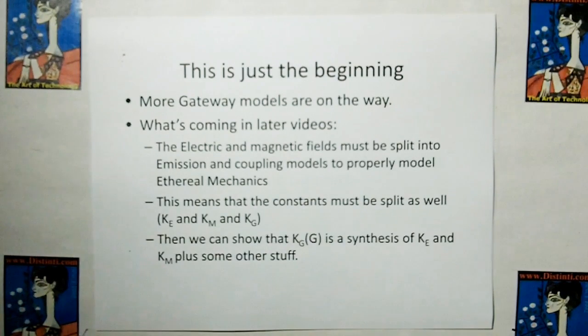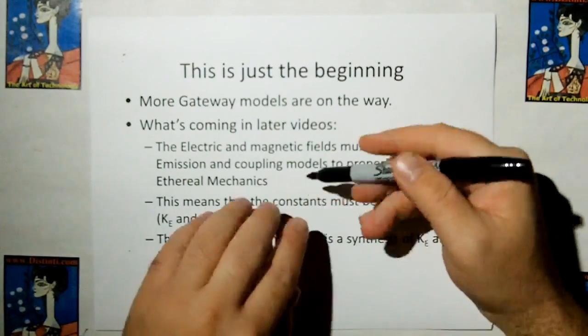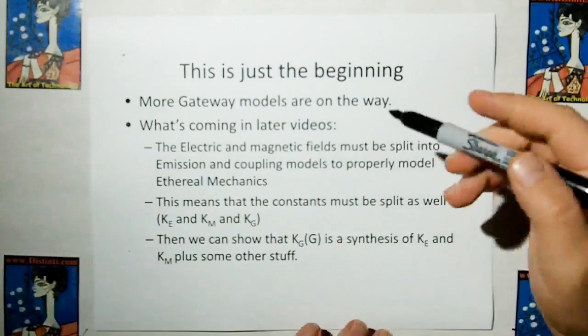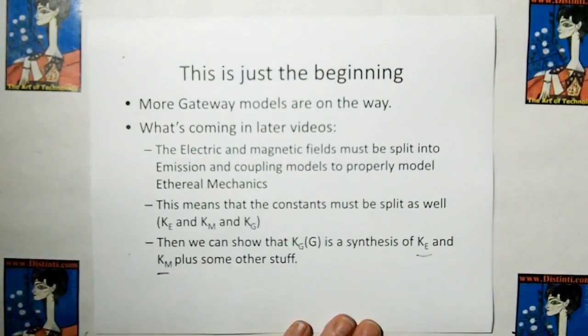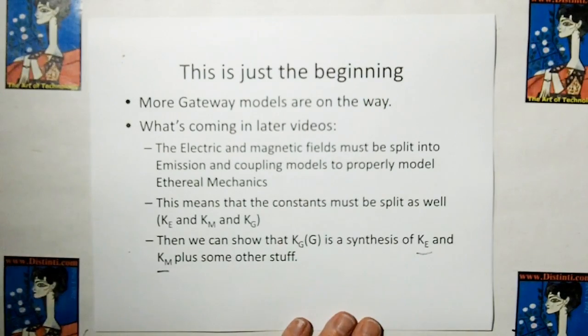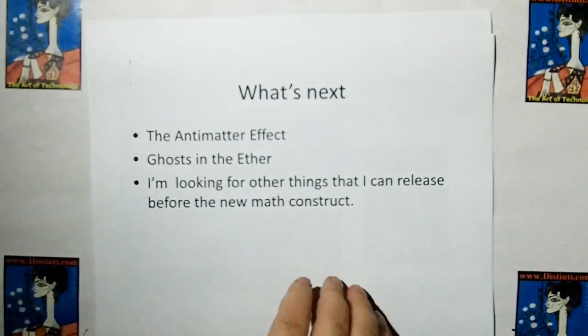This means that the constants must be split as well. KE, KM, and G. And then we can show that KG, which all the other, they use just G, is a synthesis of both KE and KM, plus some other stuff.